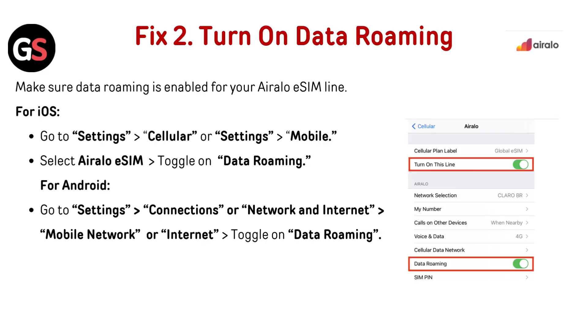Turn on data roaming. Make sure data roaming is enabled for your Airalo eSIM line. For iOS, go to Settings, then Cellular — or Settings, then Mobile. Select the Airalo eSIM and toggle on data roaming.